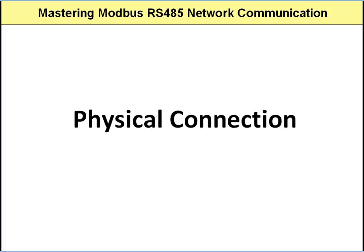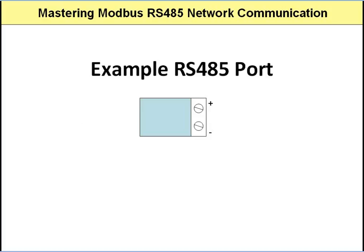On any device that supports RS-485, there must be a physical RS-485 communications port. Though this port may be housed in various types of connectors, more often than not you will see it as two screw terminals. One of the screw terminals will be marked positive and one will be marked negative. RS-485 uses only these two lines for connection.